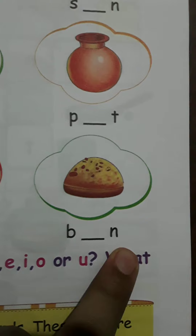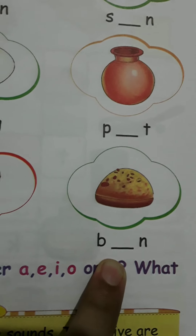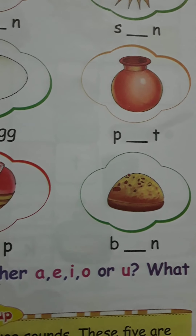Last, this is a picture of a bun — it is a bun, a food item. So what is missing here? B-N is given, so what will we put here? U. Writing U gives us B-U-N — bun.